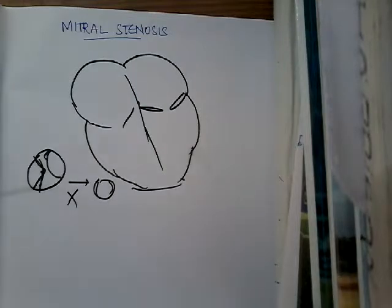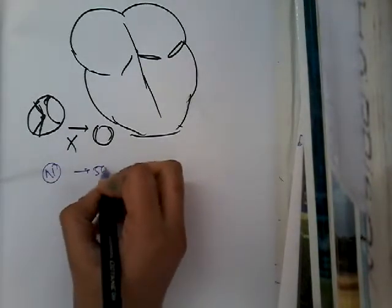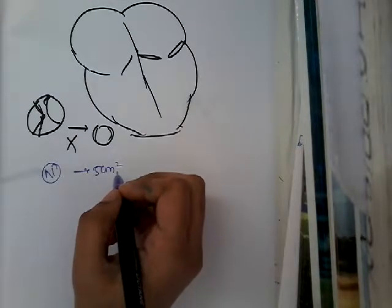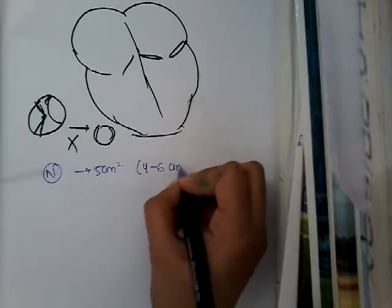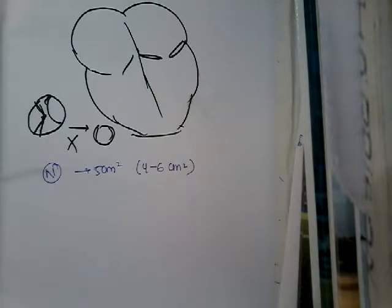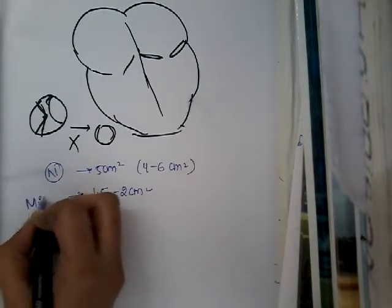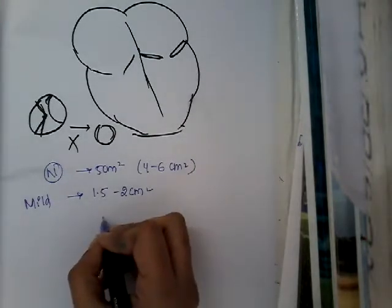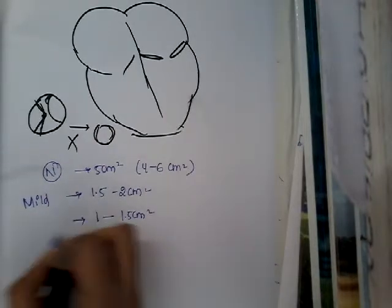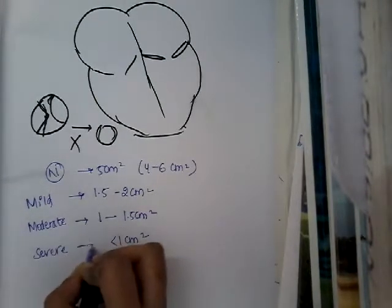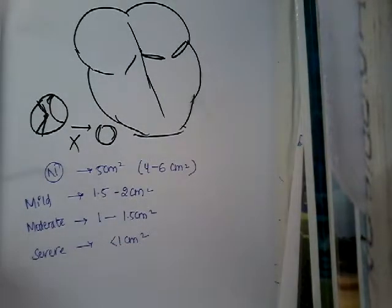Before understanding stenosis, you need to know the normal size of the mitral valve. The normal area of the mitral valve is 4 to 6 centimeter square, typically 5 centimeter square. When the mitral valve opening is narrowed to 1.5 to 2 centimeter square, that is mild mitral stenosis. Narrowed to 1 to 1.5 centimeter square is moderate mitral stenosis. Less than 1 centimeter square is severe mitral stenosis.